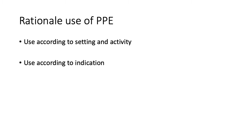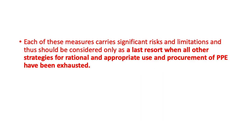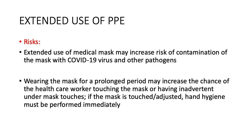Rational use of PPE is important — use according to setting, activity, and indication; choose the proper category one, two, or three according to the type of procedure. In case of severe shortage, options include PPE extended use, reprocessing, and reuse, and considering alternate items. However, each of these carries significant risk and limitation and should be considered only as a last resort — only when all other strategies for rational use, appropriate use, and procurement of PPE have been exhausted.